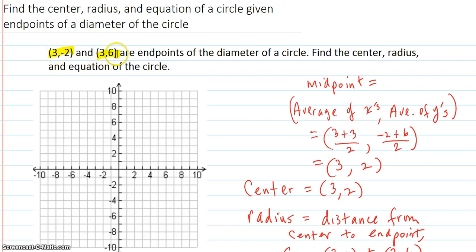(3, -2) and (3, 6) are endpoints of a diameter of a circle. Find the center, radius, and equation of the circle.